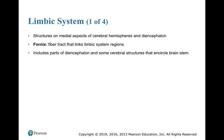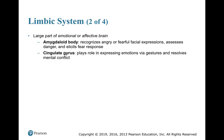The limbic system has structures on the medial aspects of the cerebral hemispheres and in the diencephalon. There's a structure called the fornix, which is a fiber tract that links the limbic system regions. It includes part of the diencephalon and some cerebral structures that encircle the brain stem. It is a large part of our emotional or affective brain.